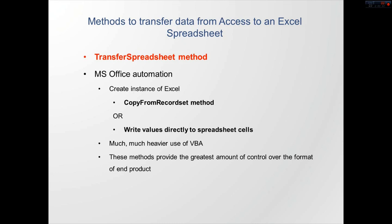I've used three different methods to do it. The first method, shown here at the top in red, is the TransferSpreadsheet method. It's a fairly easy method to use — it only requires a couple lines of Visual Basic or VBA code. However, it's the most limited method in terms of what you can build on the Excel side. The shortcoming is that you have no control over how the data is laid out in the spreadsheet. It's going to place your data starting in cell A1, go across, go down, and that's all the control you get.